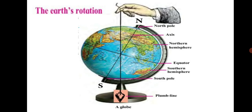Take a globe like the one in the picture and spin it. Note the line around which it rotates. Take a plumb line and hold it close to the globe as shown in the picture. If you cannot get a plumb line, tie a long thread to an eraser and make one. You will see that the plumb line and the Earth's axis make an angle — they are at an angle to each other.